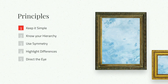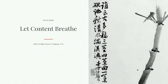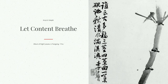The first principle is keep it simple. You want to let your content breathe. This is the Album of Eight Leaves, and you can see that the writing is on the left and you have plenty of white space between that and the imagery on the right. You want to think of that whenever you're laying out your content — white space that lets the content breathe and gives room so that readers can really focus.